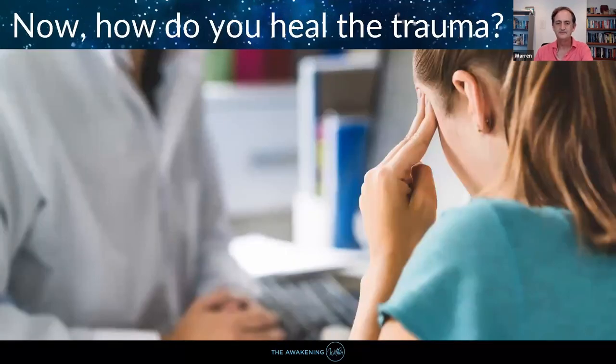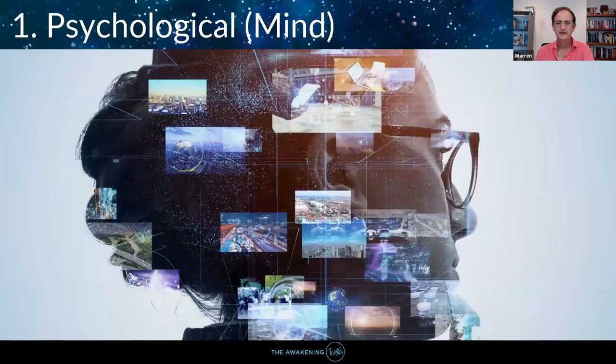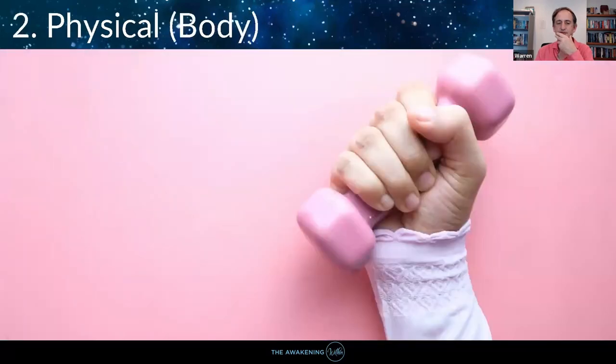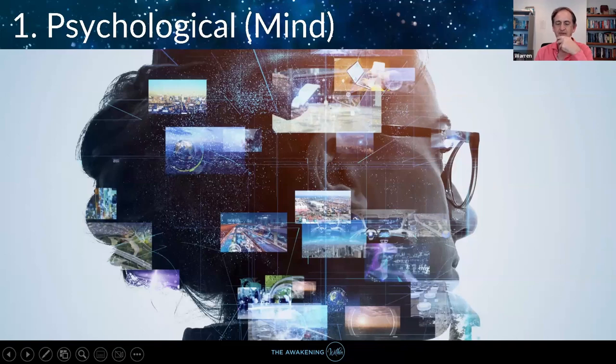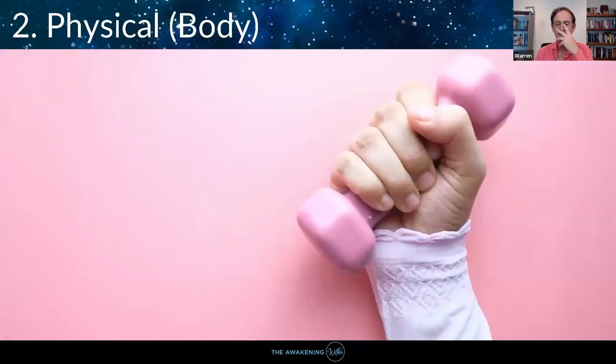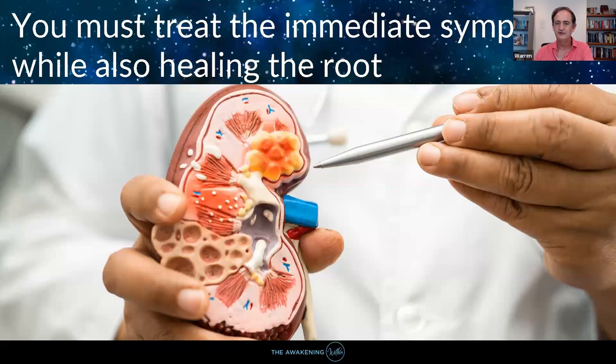Now, how do you heal the trauma? To heal it, you must heal it on all three levels. Let's break down the three pillars of health. One is psychological. Two is physical. And three is energetic. You definitely got to be getting help to deal with the mind and the mental battle that you face. Dr. John Sarno in his mind-body health book has shown that many physical health conditions do have an underlying psychological root. Number two, you do have the physical body. And the third one is energetic or etheric and spirit. You must treat the immediate symptoms while also healing the root.